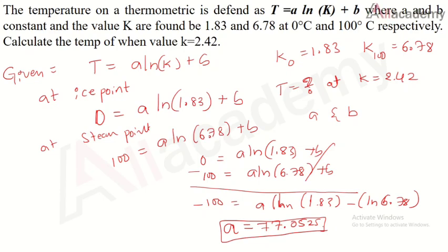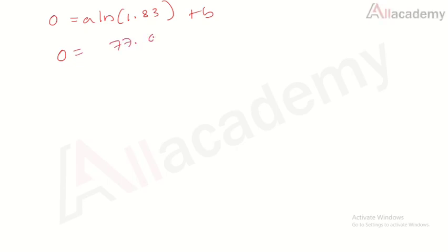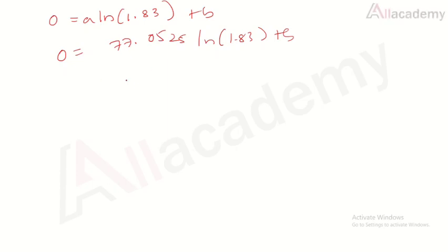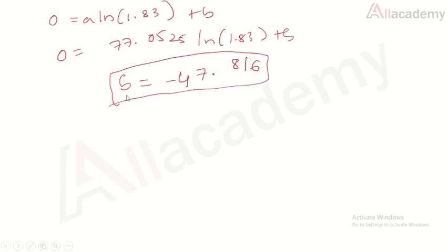Now substituting a = 77.0525 into the ice point equation: 0 = 77.0525·ln(1.83) + b. Simplifying: b = -77.0525·ln(1.83) = -47.816. So the constant b = -47.816.